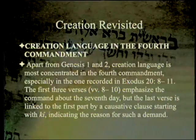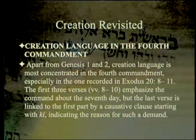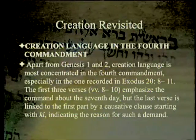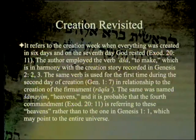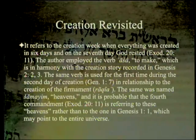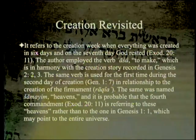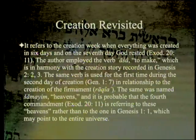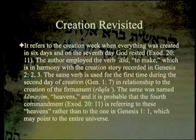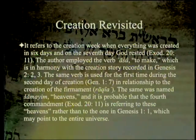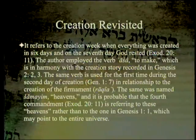The first three verses, verses 8 through 10, emphasize the command about the seventh day, but the last verse is linked to the first part by a causative clause starting with 'ki' — 'therefore' or 'because' — indicating the reason for such a demand. It refers to the creation week, when everything was created in six days and on the seventh day God rested. In Exodus 20:11, the author employed the verb 'asah,' to make, which is in harmony with Genesis 2:2-3.